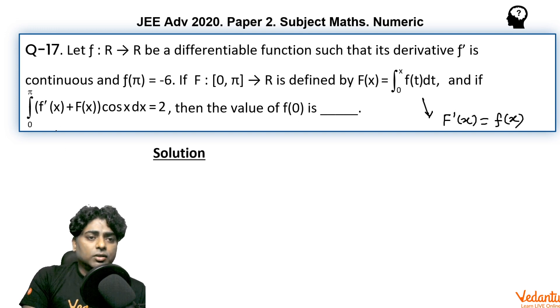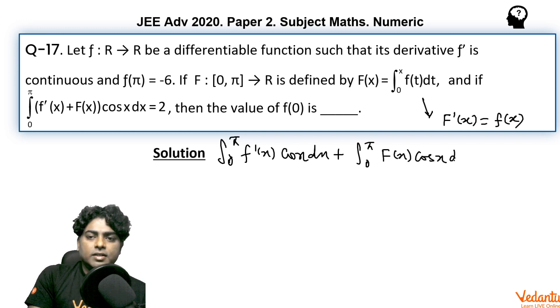Now come to the information given. I can say that integral from 0 to π of f'(x)cos(x)dx plus integral from 0 to π of F(x)cos(x)dx equals 2.